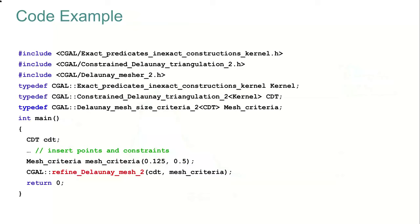Here is a 2D code snippet showing how to generate a 2D triangle mesh. You start with the standard includes and type definitions. Then you create your triangulation. You can insert points, constraints, and seed points to define the domain you want to mesh. You set the mesh criteria with constraints on angle and element size, and then call the free function that will refine the constrained triangulation with your own criteria.